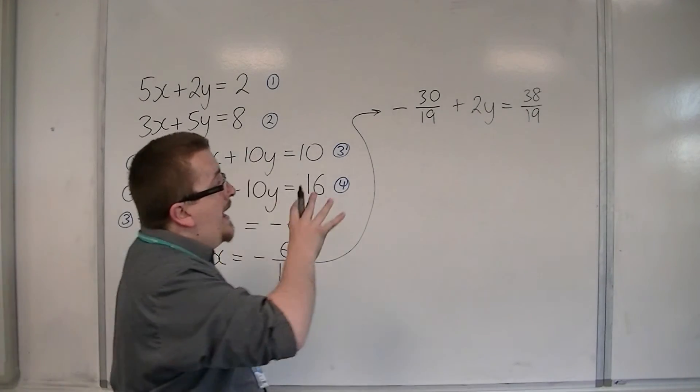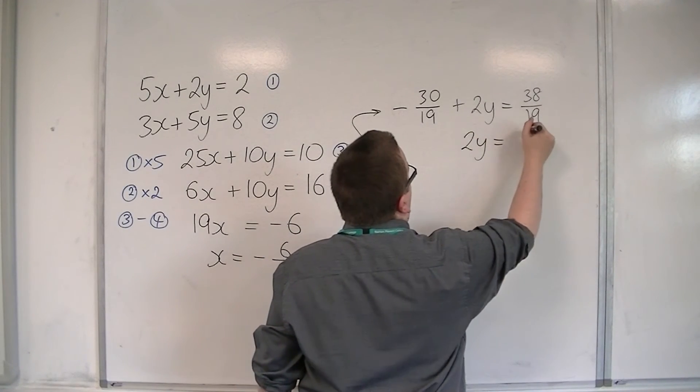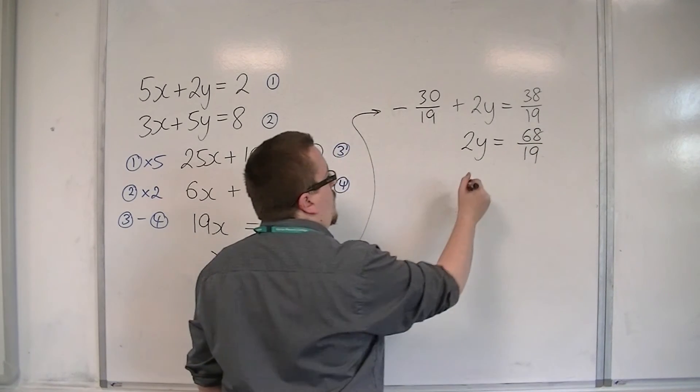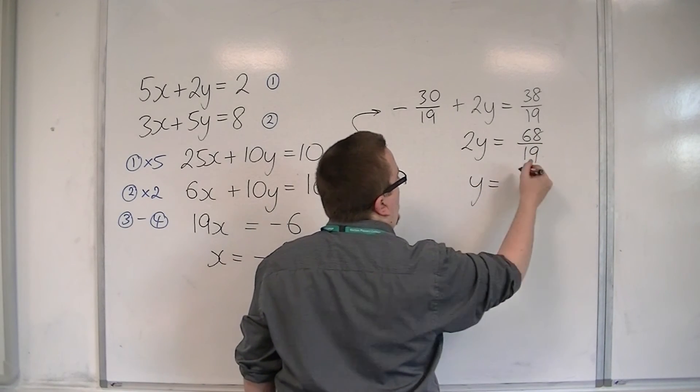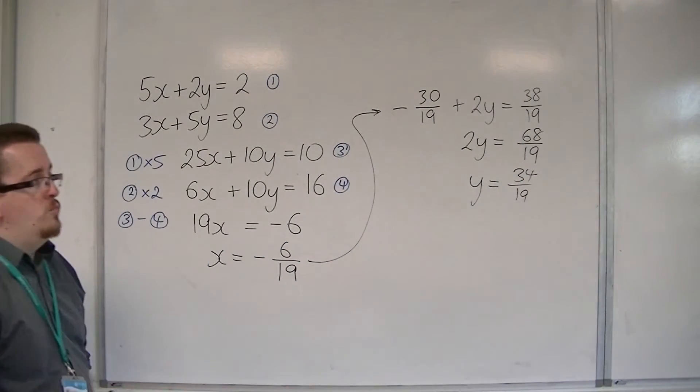I'm now going to add 30 over 19 to both sides. And I'm going to get 68 over 19. Then, I want to halve both sides. And I'm going to get 34 over 19. Halving the numerator there.